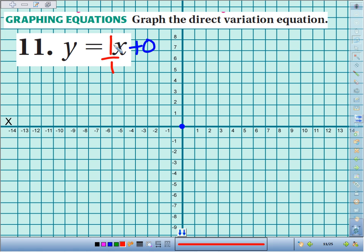So it gives us a blueprint for finding another point. Rise over run. Rise 1, run 1. Rise 1, run 1. And y equals x is just a nice little diagonal line, just like that.